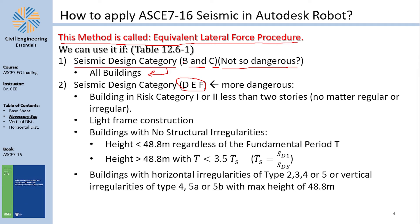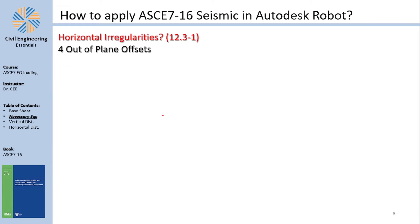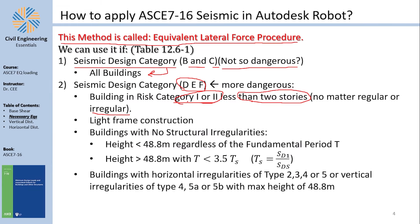For seismic design categories D, E, and F, one relaxed condition exists: if the building is risk category 1 or 2 with fewer than 2 stories — meaning height of 10 meters or lower — then structural regularity or irregularity does not matter. It is strict regarding the two-story height limit but relaxed regarding irregularity requirements.